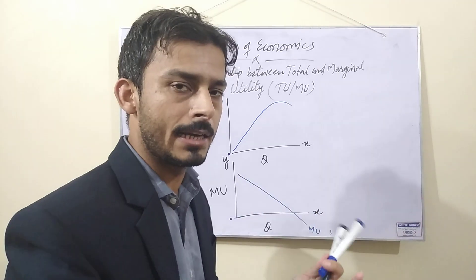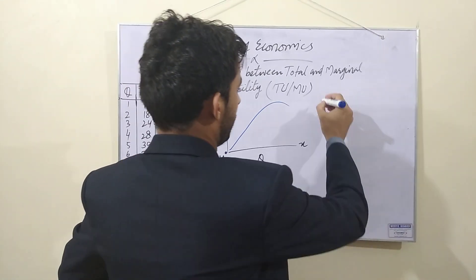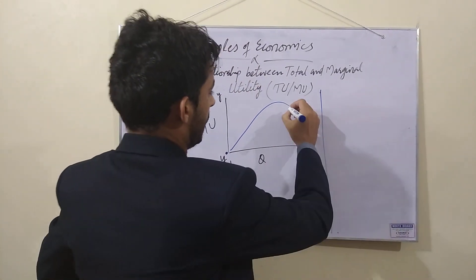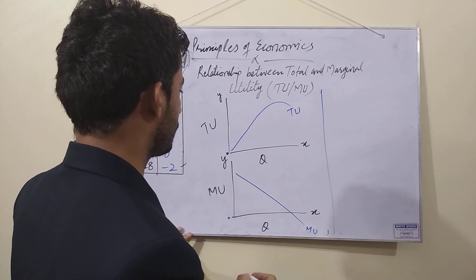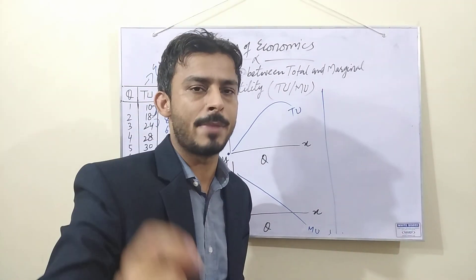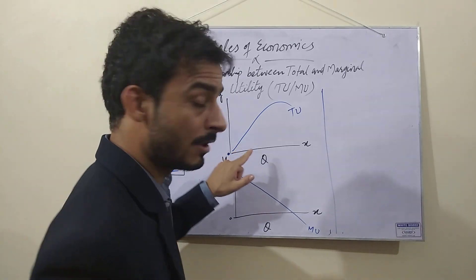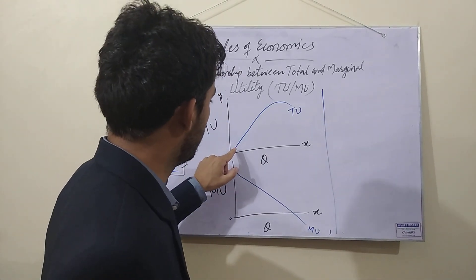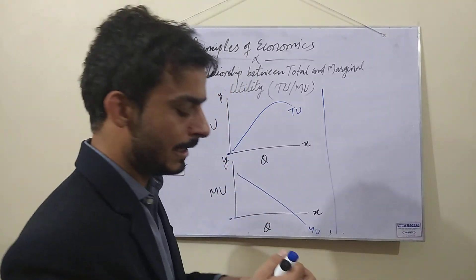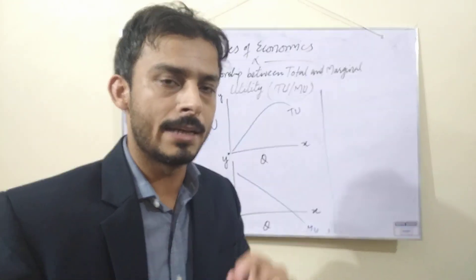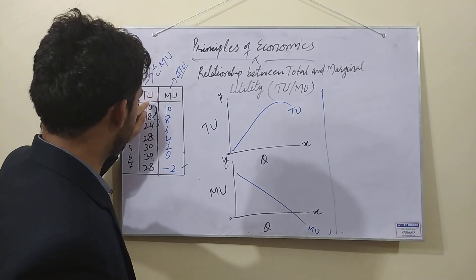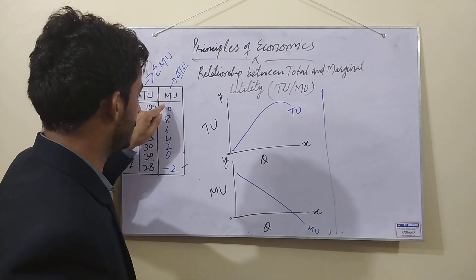Now, let's see what the relationship between both are. Marginal and total utility. Here I wrote total utility. First relationship. Students keep in mind. Observe graph or schedule. When total utility increases, then marginal utility decreases.